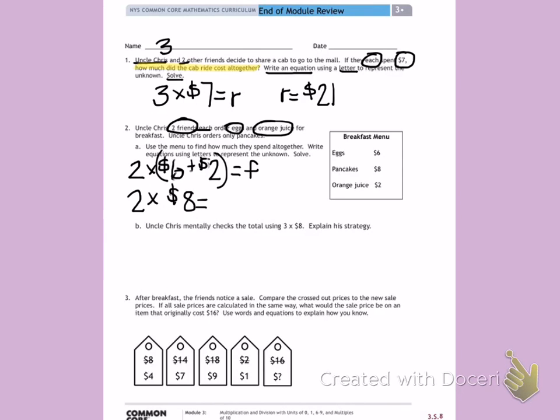I'm going to go back and I'm going to use F as my letter. The two friends are spending $16 on their breakfast. Then Uncle Chris spends $8 on his breakfast. $16 is what his two friends spent, plus the $8 he spent will give us our total. 16 plus 8, I can do that in my head. 16, 17, 18, 19, 20, 21, 22, 23, 24. They spent a total of $24 for breakfast.